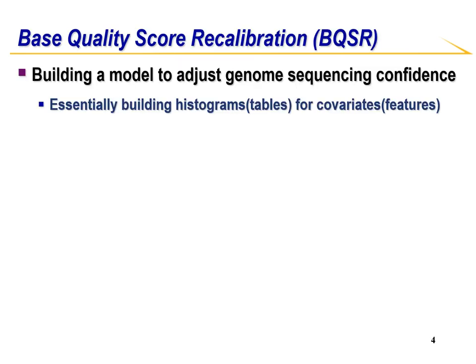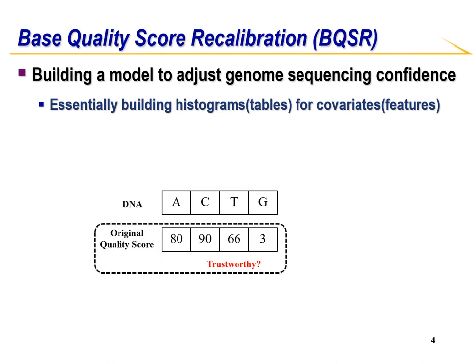Why is BQSR important? Because the short variant algorithms rely heavily on the quality score assigned to the individual bases in each sequence read. This quality score tells us how much we can trust a particular observation. If we have a base that has a low quality score, that means we're not sure we actually read it correctly, and it could actually be something else.